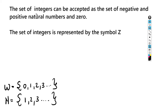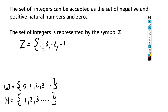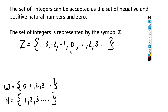The next set is the set of integers, which can be defined as the set of negative and positive natural numbers and zero. The set of integers is represented by the symbol Z. So Z = {..., -3, -2, -1, 0, 1, 2, 3, 4, ...}, going to negative infinity on one side and positive infinity on the other.